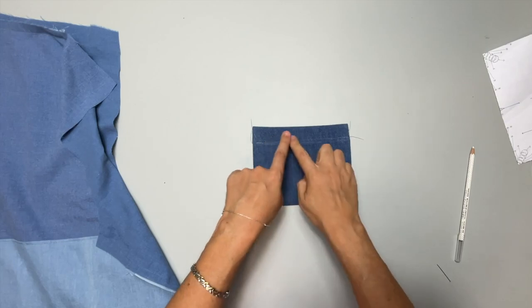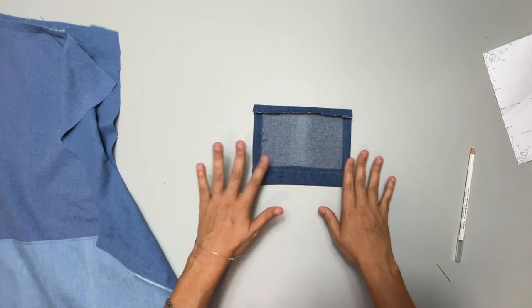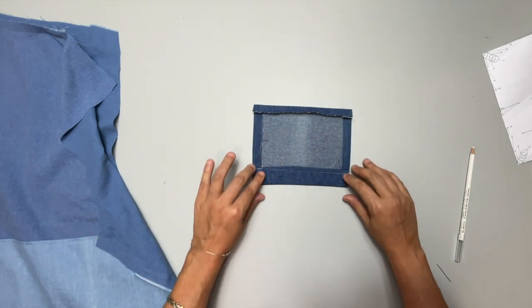After you address the top end of the pocket, you're going to go to the iron and turn all the raw edges in by five eighths, just like we did on the back pocket. Same exact thing.